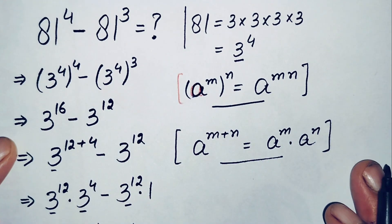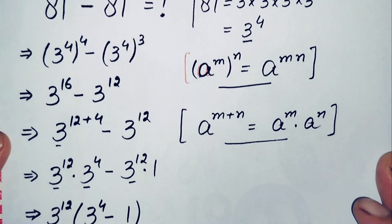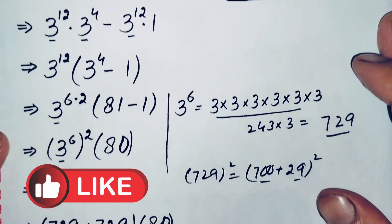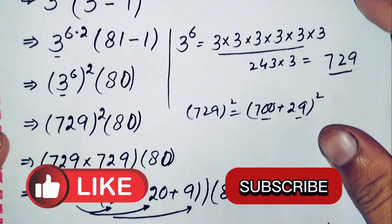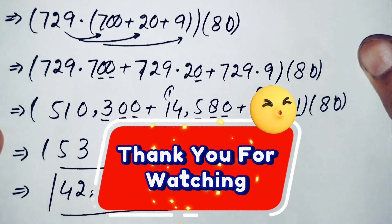So 42,515,280 is the value of this interesting exponential simplification math problem. If you like this video, don't forget to subscribe to my YouTube channel. Thanks for watching.